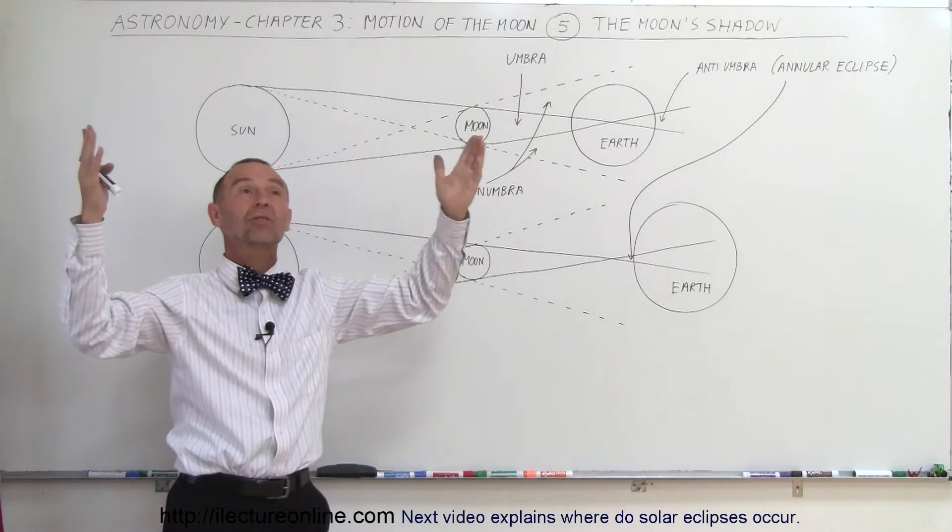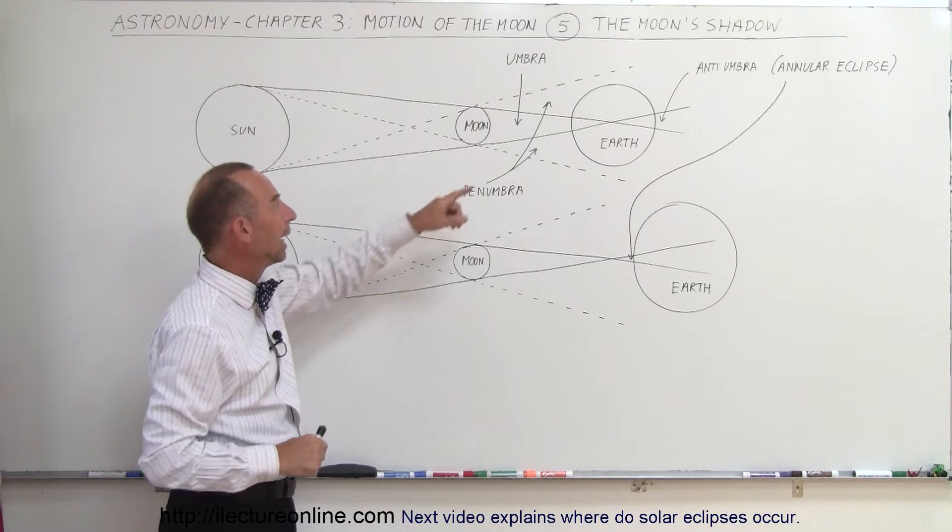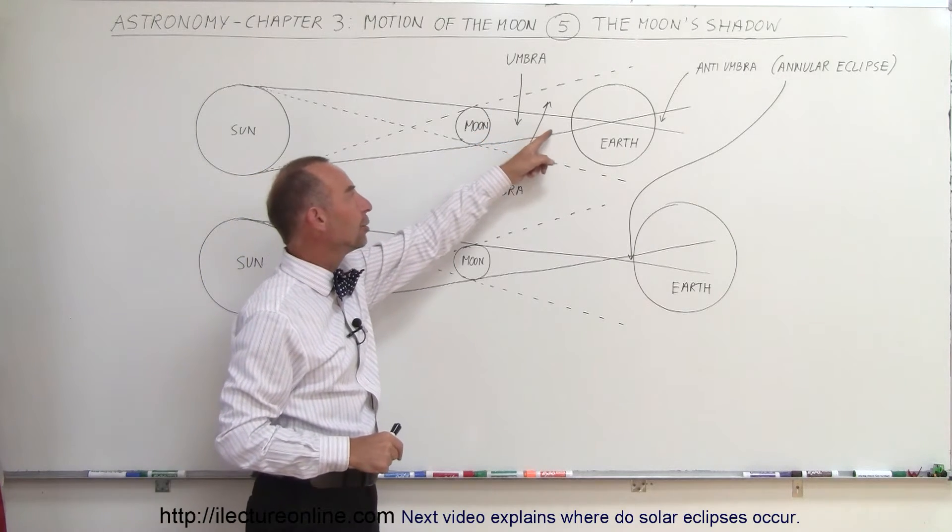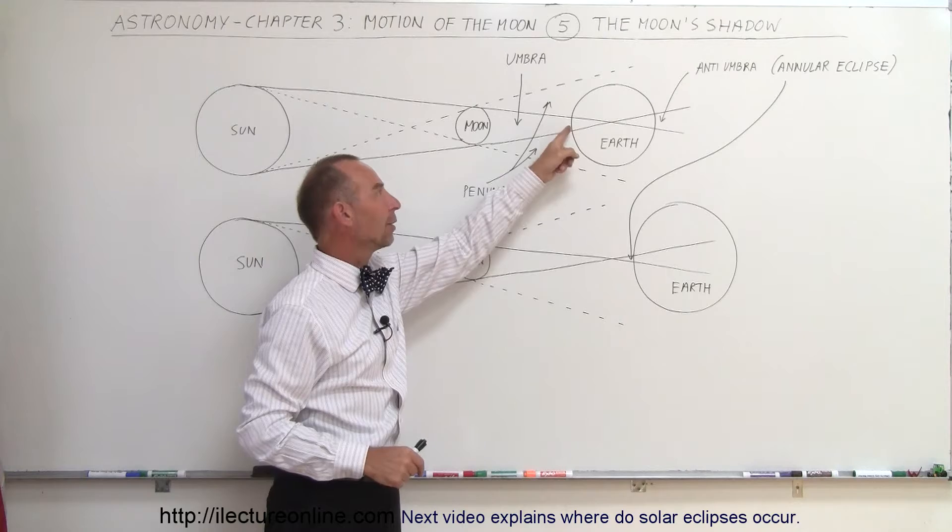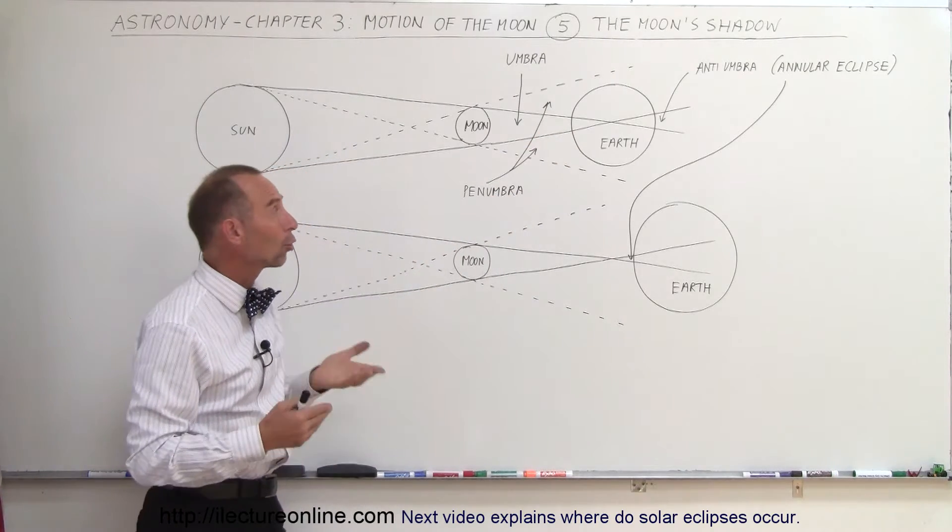If you're right there, you can look up in the sky and see all the stars of the night. And there's no light from the sun hitting you. So this region of the earth right here is experiencing a total solar eclipse.